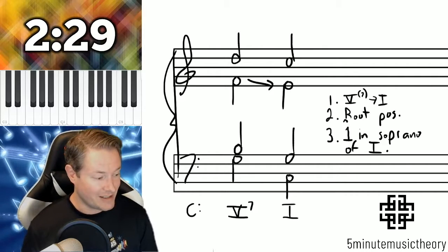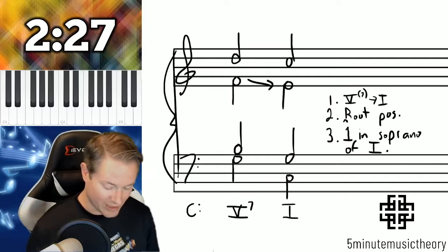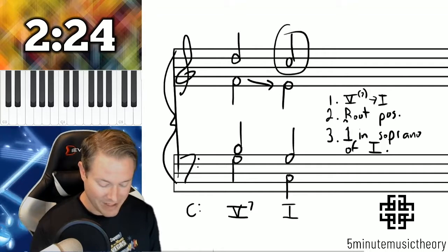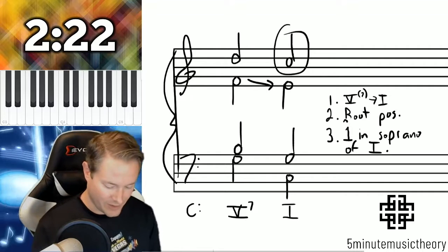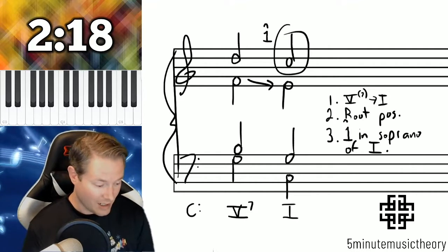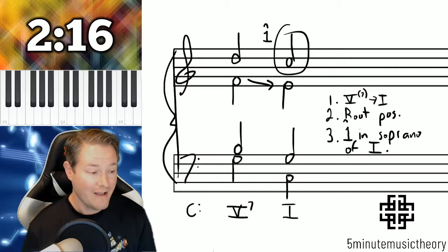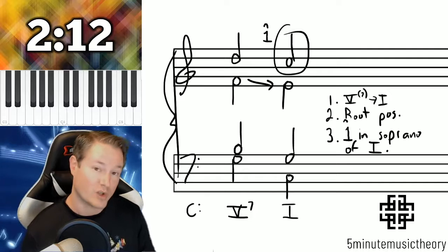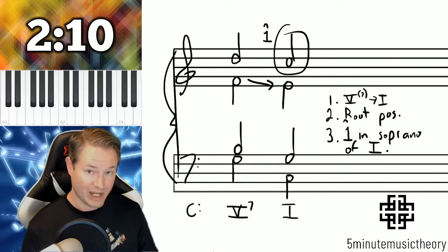So we have a dominant seventh in root position to a tonic in root position. And then that criteria number three, criterion number three, is this. Notice that the first scale degree is taking place in the tonic chord of this cadence. That is really important because if that doesn't take place, even if the first two criteria are met, it's not a PAC.